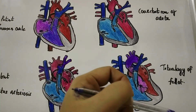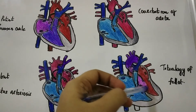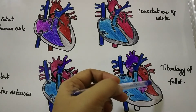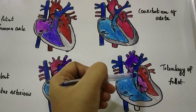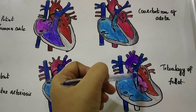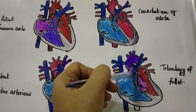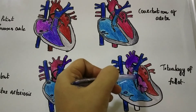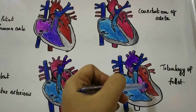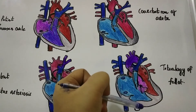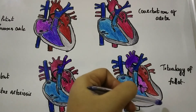Next is the tetralogy of Fallot. It occurs when there is an opening between the interventricular septum. It is a combination of four defects: pulmonary stenosis, which is narrowing or blockage of the pulmonary trunk; overriding of the aorta, where the aorta opens to both the right and left ventricle, causing mixing of oxygenated and deoxygenated blood; and right ventricular hypertrophy.